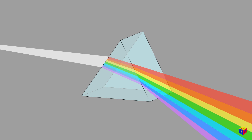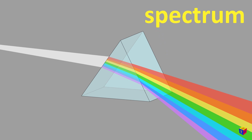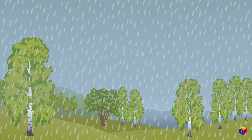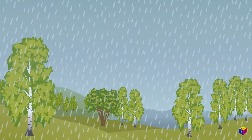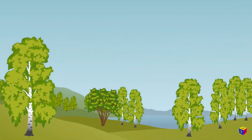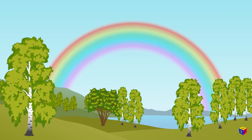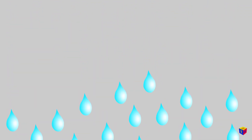The light decomposed into separate colors is called spectrum. The splitting of light into a spectrum is called dispersion. We observe this phenomenon in nature when we see a rainbow. Water droplets, like small prisms, also spread sunlight into a spectrum.